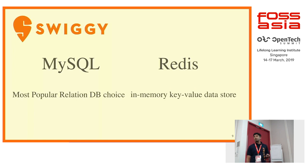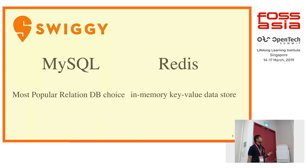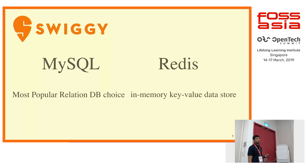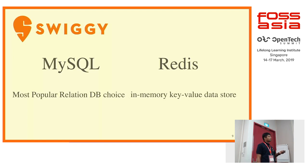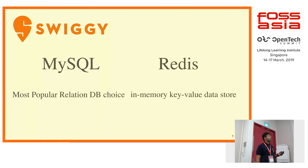Let's see how applications are using MySQL and Redis. MySQL is one of the most popular relational choices for most applications. Redis is an in-memory key-value data store. Redis also provides persistent storage depending on the requirement, though that is one of the more recent use cases of Redis.